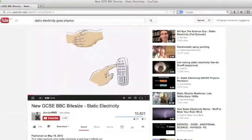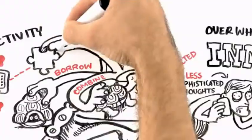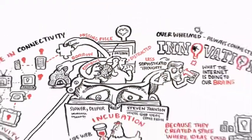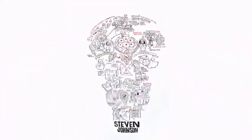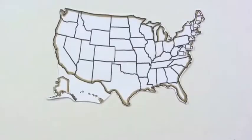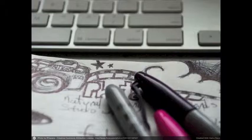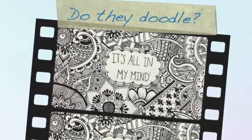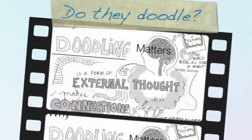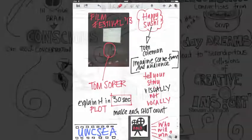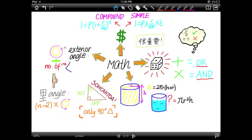Our learning zone today ranges from YouTube demonstrations to animated RSA explanations and Common Craft videos. How are you getting your students to show what they know? Do they doodle as they are processing? Do they draw what they are thinking? Do they take notes or brainstorm?